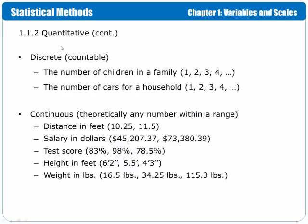Under quantitative, we also have separation between discrete and continuous variables. The discrete variables are countable variables, meaning we have just a few numbers. So, the number of children in a family, for example, are just a few different options, and they're all numbers. The number of cars in a household, as well.